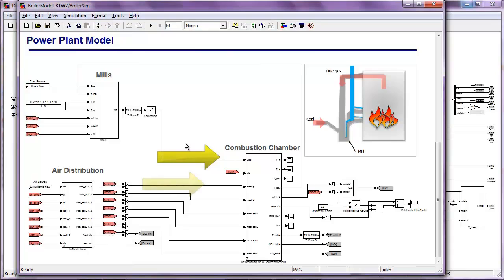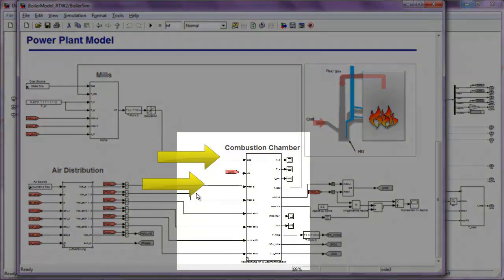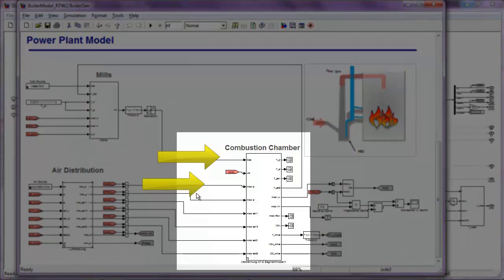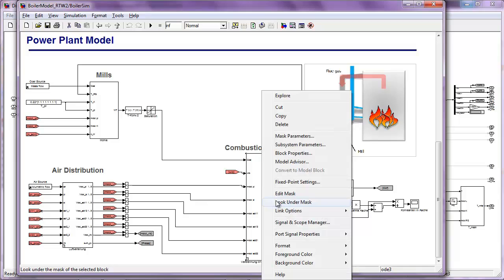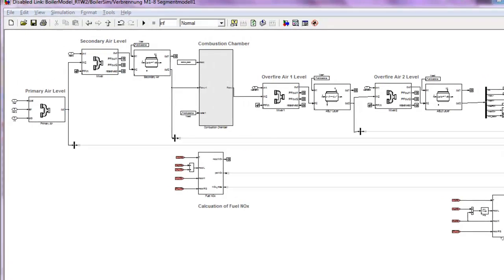The coal from the mills and air from the air distribution is forwarded to the combustion chamber. Now let's take a look inside the combustion chamber.